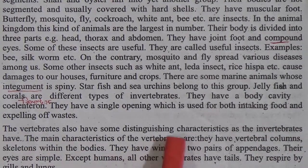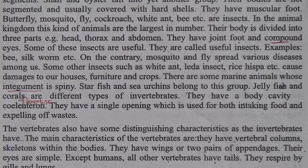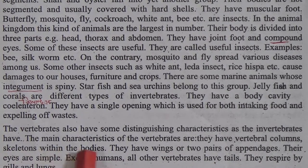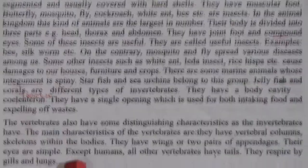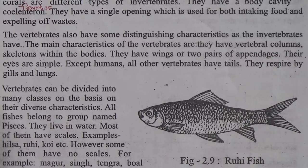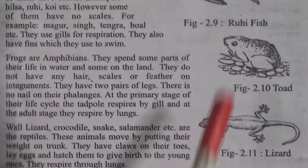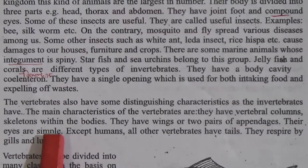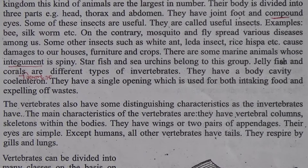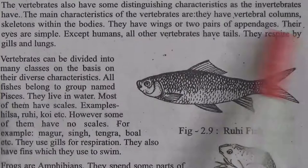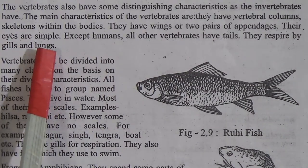Vertebrates also have some distinguishing characteristics. The main characteristics of vertebrates are: they have vertebral columns and a skeleton within their bodies; they have two pairs of appendages — appendages means body parts like legs or hands; their eyes are simple; and except for humans, all other vertebrates have tails. They respire by gills and lungs — in humans, respiration is by lungs.